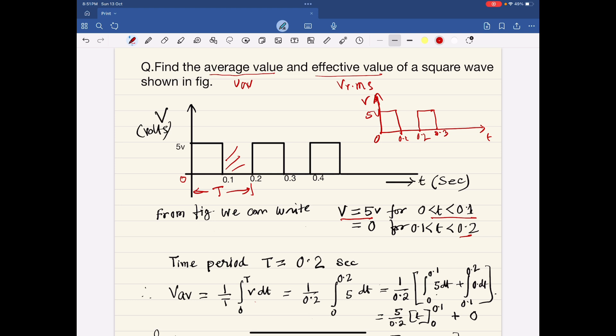The time period T is equal to 0.2. We will integrate V is equal to 5 volt. So this will be 1 by 0.2, 0 to the integration limit 0 to 0.2, 5 dt.